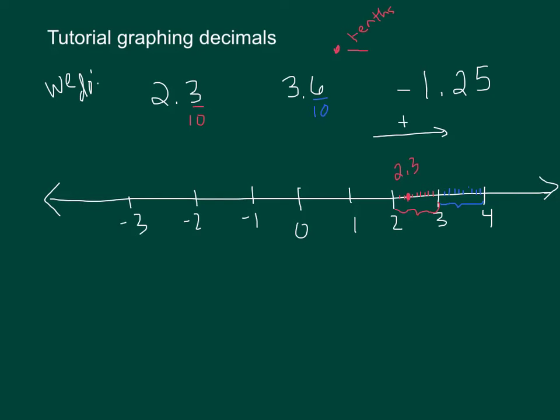And of those starting at the 3, I'm going to go across 6 of them. 1, 2, 3, 4, 5, 6. And that is 3.6. Easy, huh?